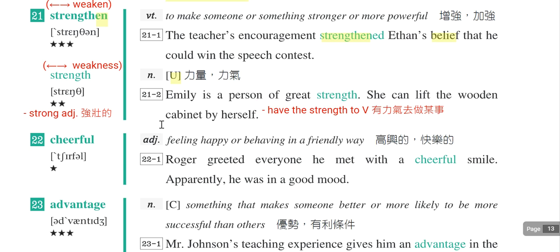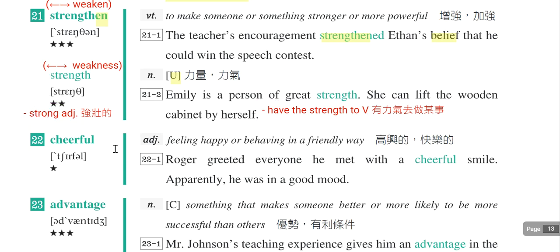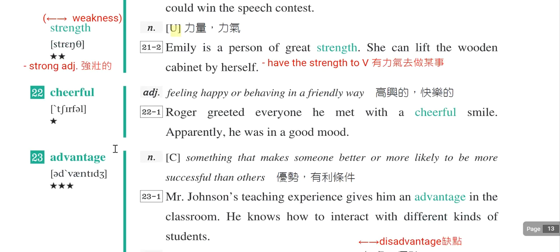形容词是strong，强壮的。第二十二个单字是cheerful，是很高兴、很愉快的，与pleasant意思相近。例句：Roger greeted everyone he met with a cheerful smile，用一个很开心的微笑跟他们打招呼，greet somebody with something。也可以说a cheerful voice，用愉快的声音打招呼。